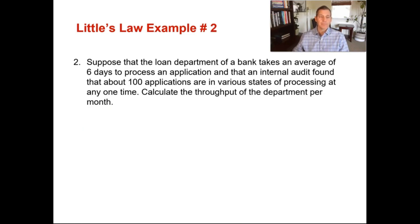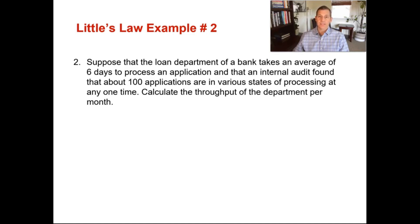Example number two: suppose that the loan department of a bank takes an average of six days to process an application, and an internal audit found that about 100 applications are in various stages of processing at any one time. Calculate the throughput of the department per month. This example asks you to solve for throughput, which is your R. Your WIP is given as 100 applications, and your T, which is your flow time, is six days.